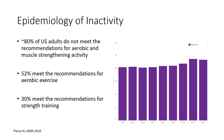No matter how we break it down, the vast majority of people in the United States are not active. 80% of adults do not meet the recommendations for aerobic and muscle strengthening activity. Those recommendations are 150 minutes per week of moderate intensity aerobic exercise, or 75 minutes of vigorous activity per week, and two days per week of strengthening exercises. About 52% meet the aerobic exercise recommendations, and about 30% meet the recommendations for strengthening.